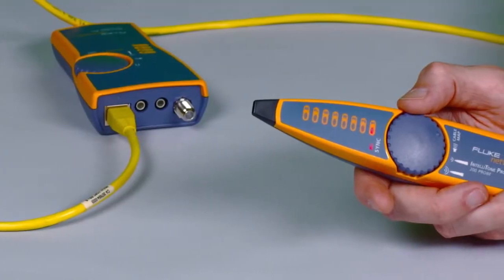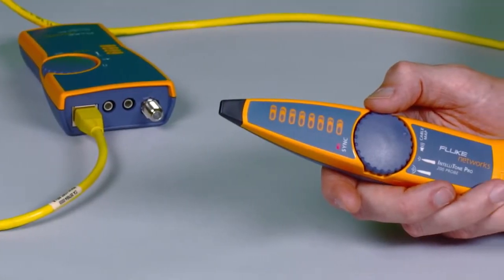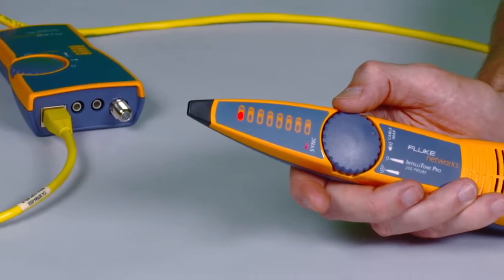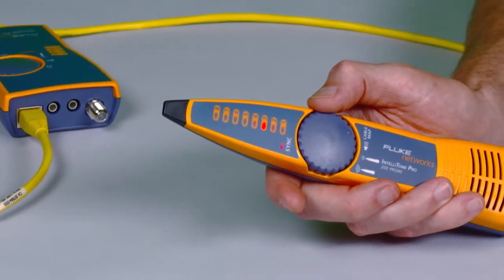Validate wire maps in a flash, finding the most common wiring faults on twisted pair cabling, such as shorts, opens, and crossed pairs.